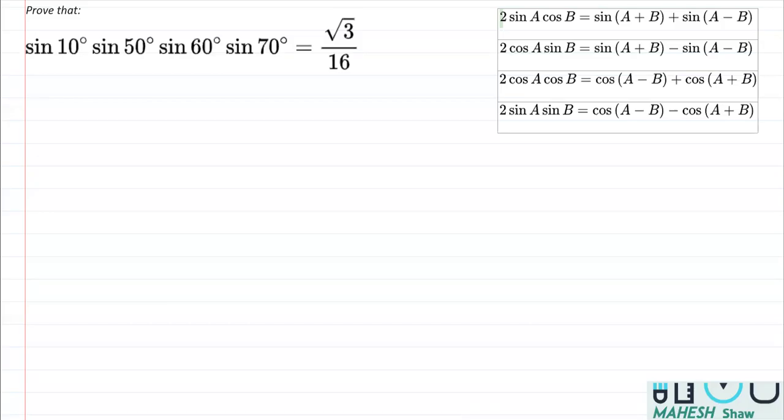In this video, we are going to solve this question from the chapter of trigonometry function class 11, which is based on these identities. The question here is sin 10° sin 50° sin 60° sin 70° equals √3/16, which is what we need to prove.